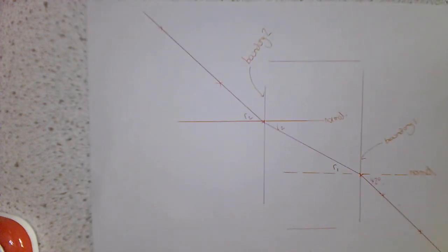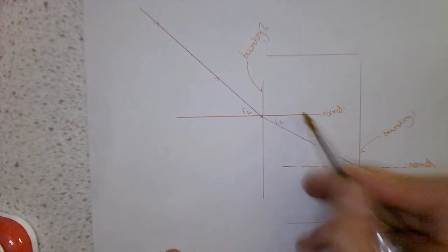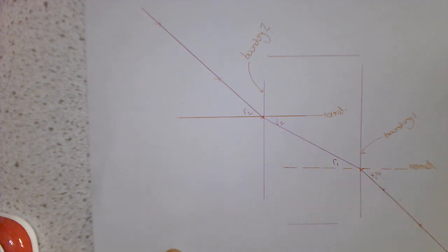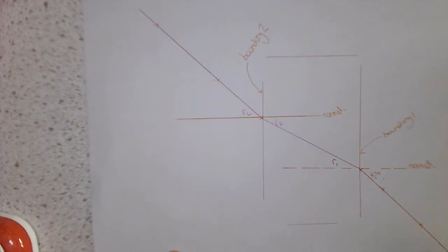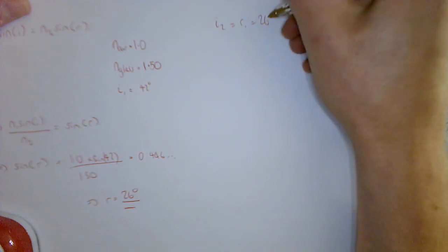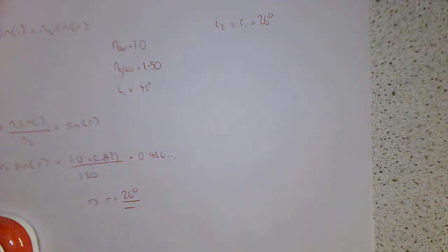Now to test it at the second boundary, we need to know some math rules. So these two normal lines are parallel to one another. Which means these two are alternate angles. So actually, now we know what R1 is, we now know what I2 is. So we know that I2 is equal to R1. Which we just calculated to be 26 degrees.